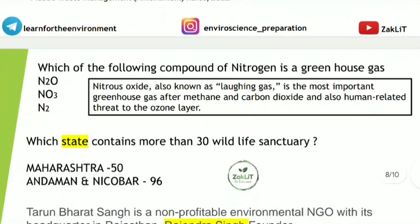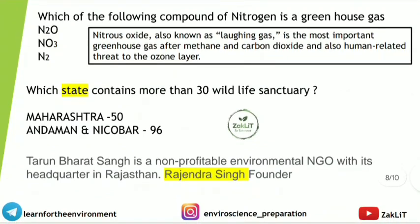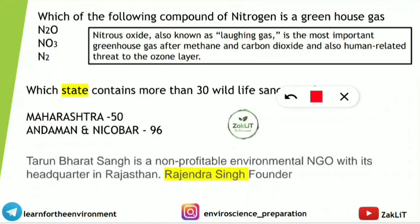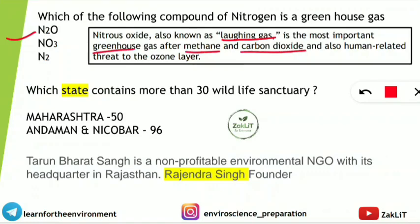The nitrogen compound that is a greenhouse gas: among options N2O, NO3, and nitrogen gas, the correct answer is N2O — nitrous oxide, also known as laughing gas. It is an important greenhouse gas after methane and carbon dioxide. It is largely released by humans and is also an ozone-depleting substance.